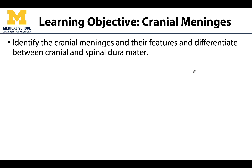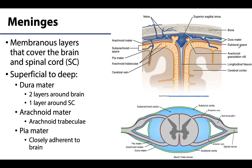The cranial meninges as well as the spinal meninges will share many similarities, but there are a few distinct differences between the two and we will talk about that as well. As a review, there are three membranous layers that surround the central nervous system — recall that the central nervous system is composed of the spinal cord and the brain. Our focus for these upcoming learning objectives will be the brain.